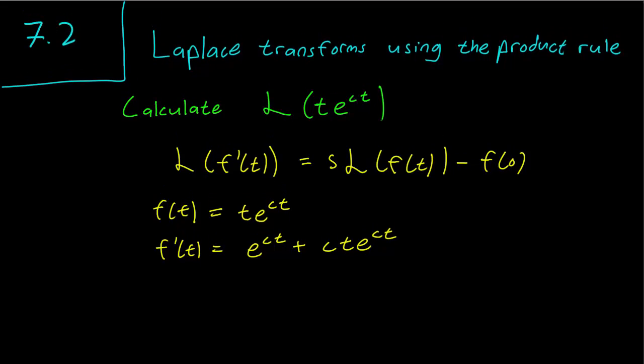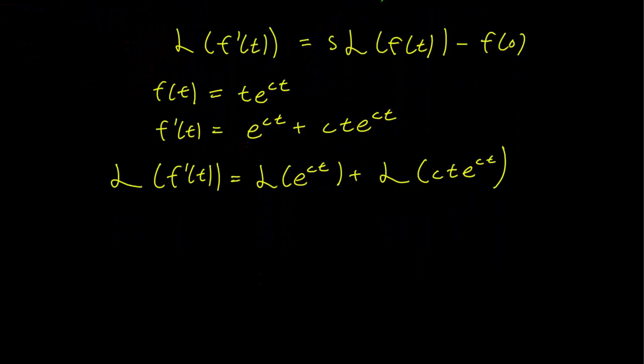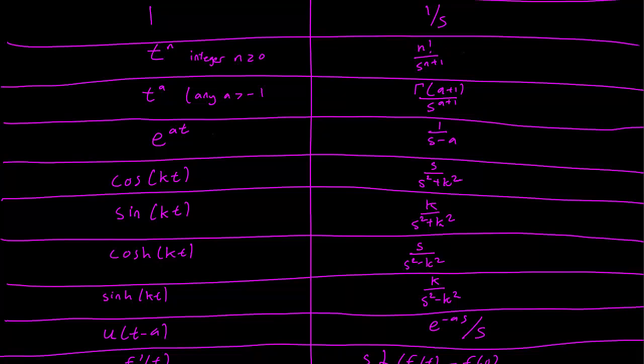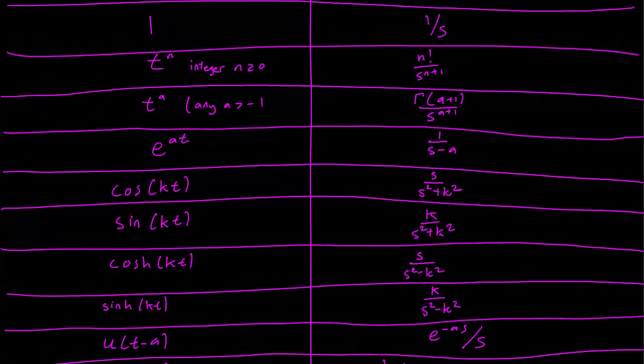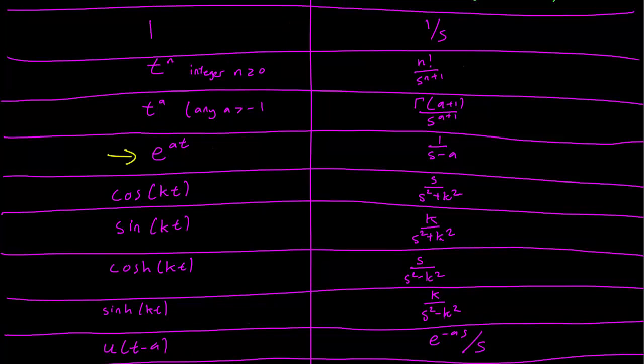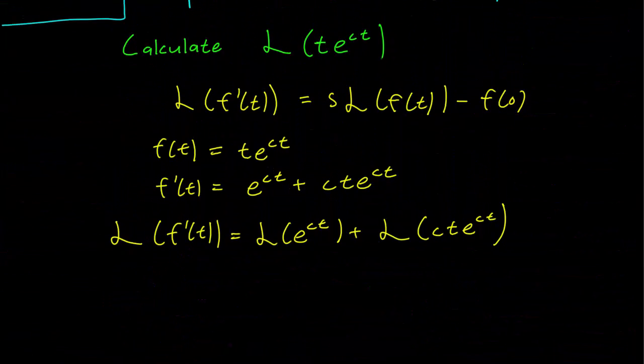Next step is to take the Laplace transform of both sides. And we consult our table and we see that the Laplace transform of e to the at is 1 over s minus a. So this is equal to 1 over s minus c. And this works for s greater than c if you recall.